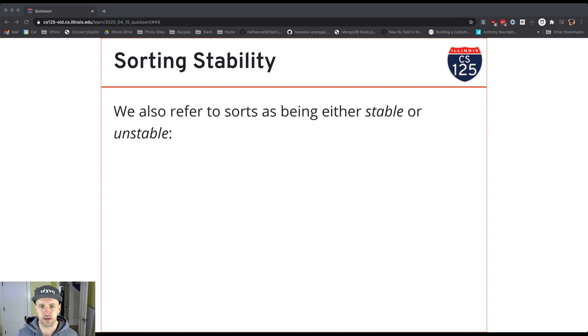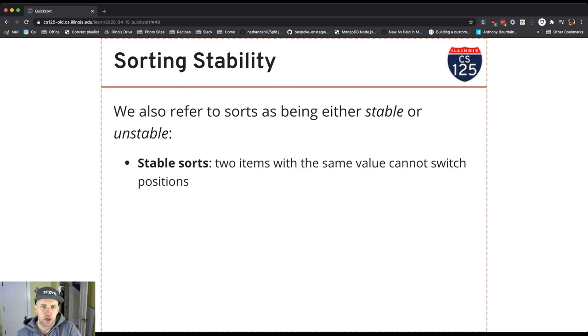Because what stability means is, there are two types of sorts, we can say a sort is either stable or unstable. A stable sort will not swap two items in the array that have equal values. An unstable sort may.